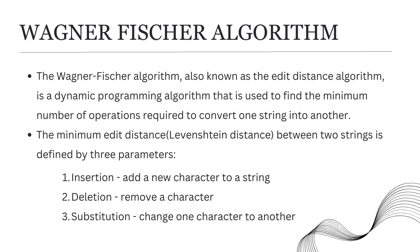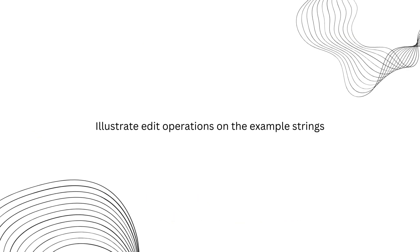It is also known as the minimum edit distance algorithm, and it tells how similar two strings are. In this algorithm, we calculate the minimum edit distance, also known as Levenshtein distance. Levenshtein distance is the measure of similarity between two strings, taking into account the number of insertion, deletion, and substitution operations needed to transform one string to another.